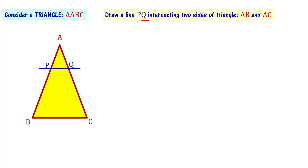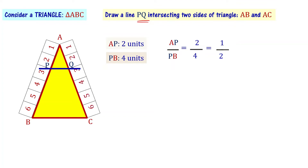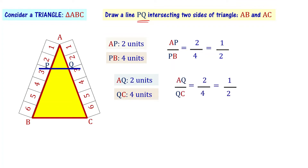Let me take the measure of side AB as 6 units. I choose the length of AP as 2 units and PB as 4 units, so AP by PB equals 1 by 2. Similarly, AQ is 2 units and QC is 4 units, so AQ by QC is also equal to 1 by 2. Now we can say AP by PB equals AQ by QC.